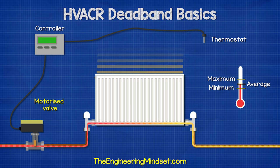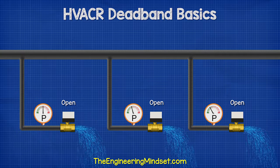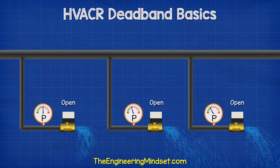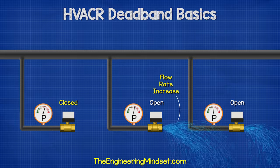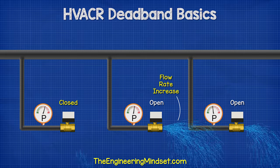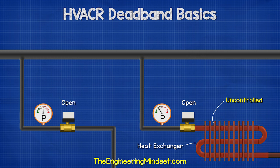However, if a fixed speed pump supplies multiple units, then as one valve closes it causes a pressure increase in the pipework, so the flow rate of water increases through the other valves. This is a problem because it will increase the heat output. The valves will constantly adjust to try and maintain the correct temperature, meaning we lose control of the system, and as the valves are working so much they will break down much faster.